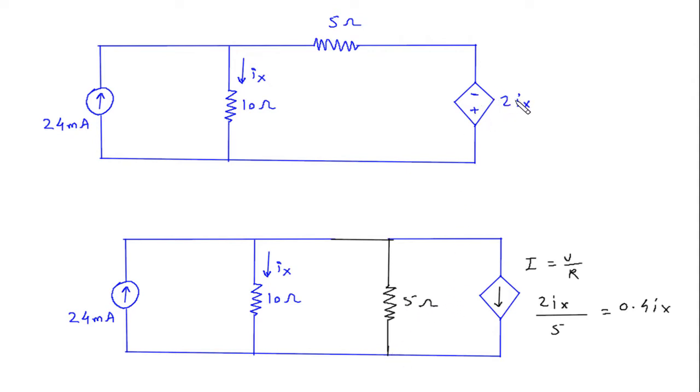This dependent voltage source is converted into dependent current source and it was in series with this 5 Ohm, now converted into parallel with 5 Ohm.